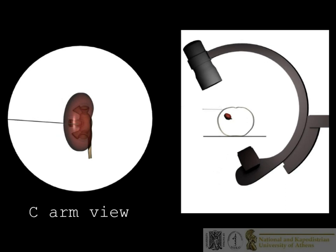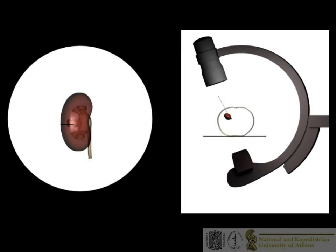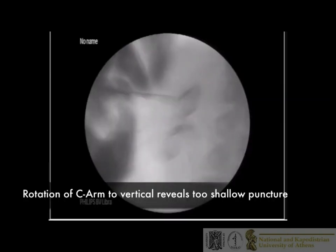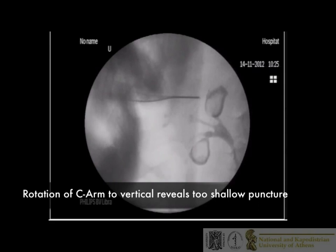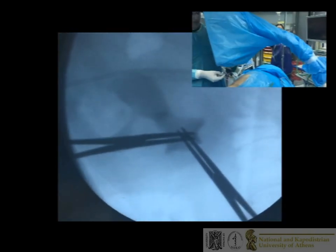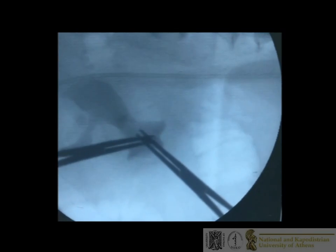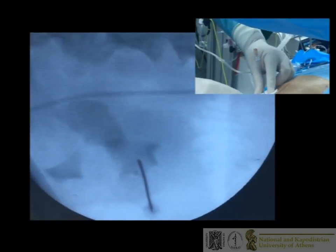The needle is set parallel to the CRM axis so that the tip and the hub of the needle, as well as the target calyx, form a single point in the fluoroscopic view. The needle is then advanced, and the CRM is rotated to zero degrees to check puncture steps. In case of too shallow a puncture, further advancement of the needle in the same direction will provide access to the system. The use of forceps during bullseye targeting is advised to reduce hand radiation exposure. Once the needle has been advanced sufficiently toward the target, rotation of the CRM to zero degrees will assist depth assessment. Reflux of urine through the needle will confirm entrance into the collecting system.